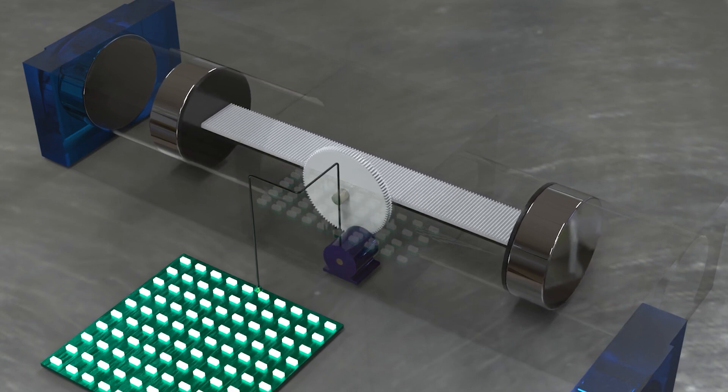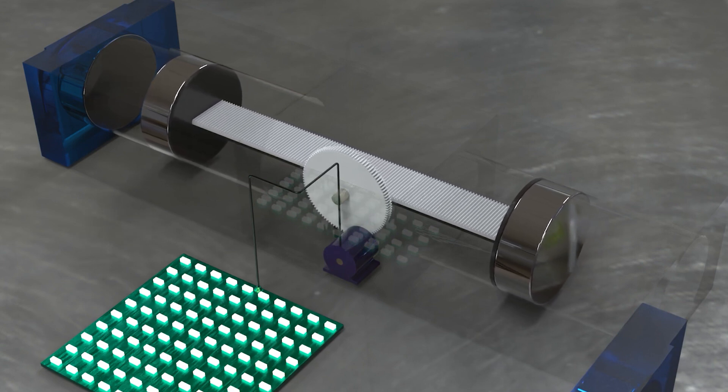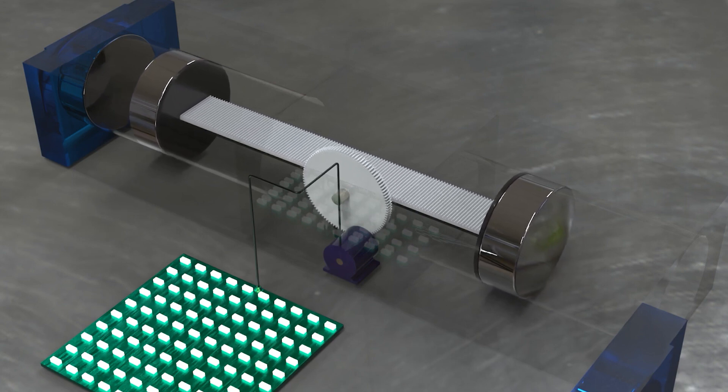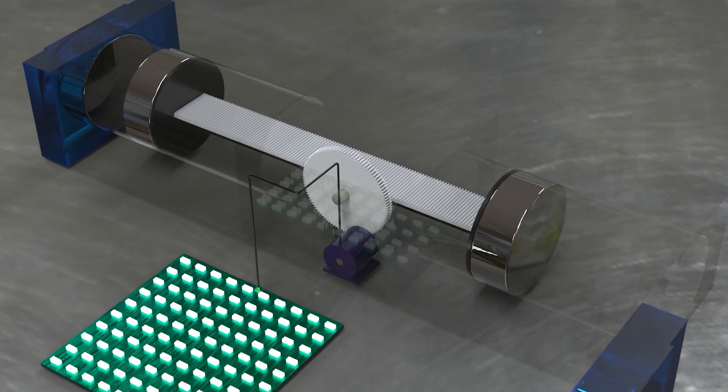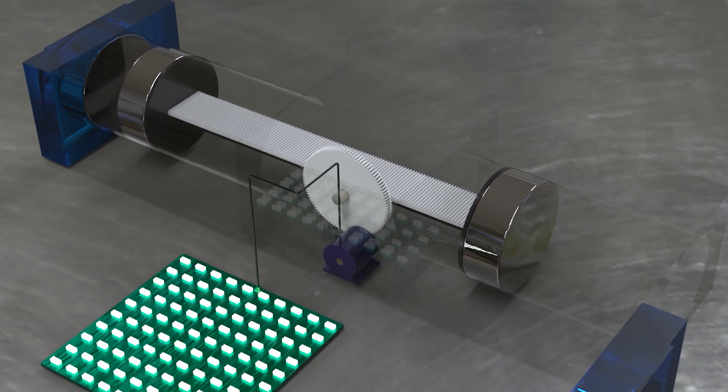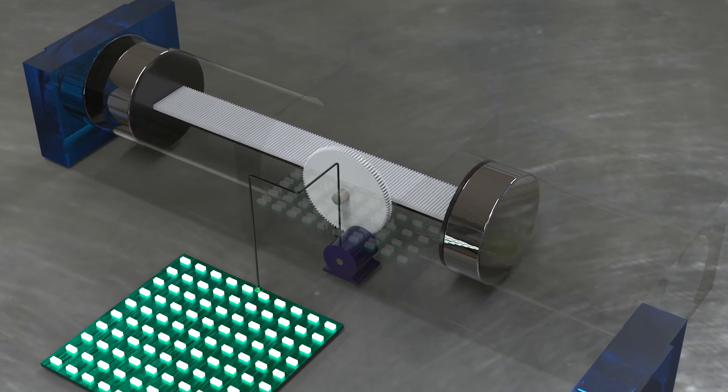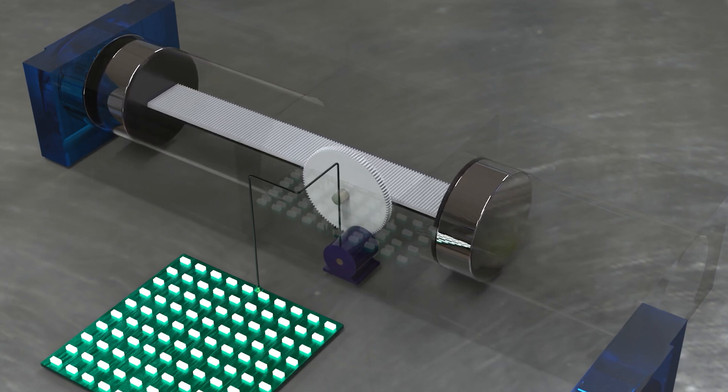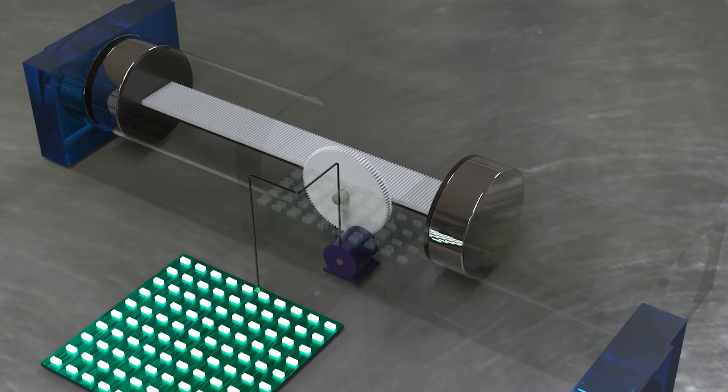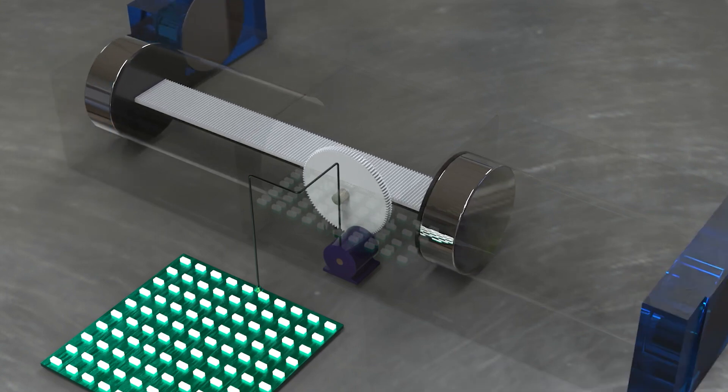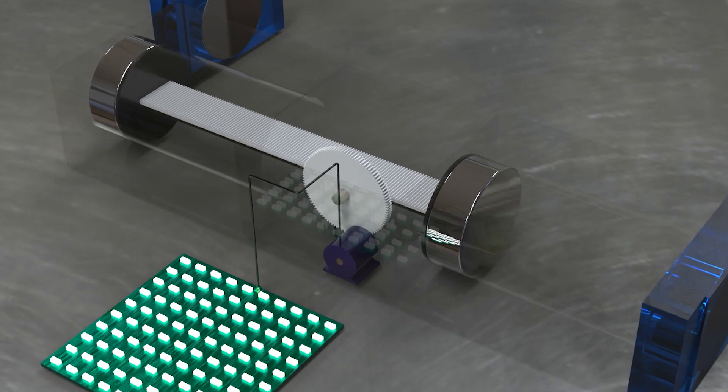The secret to this effortless movement lies in a unique mechanism located at the top of the cylinder, which relieves the pressure on the magnet and initiates the linear movement once again. Although the specifics of this mechanism remain undisclosed, it showcases the ingenuity behind the system's design, enabling efficient energy generation while minimizing the energy required for operation.